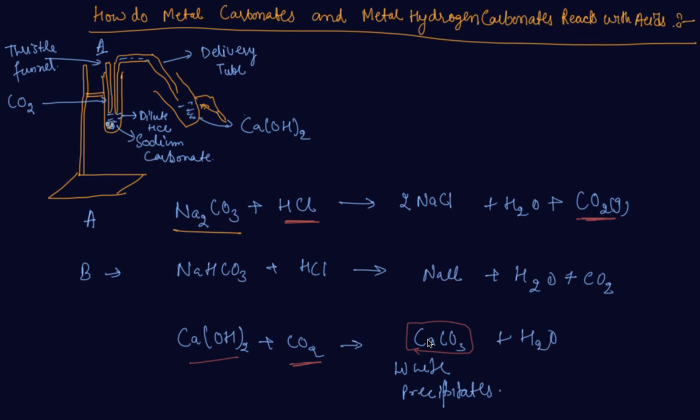So students, it is very important from the exam point of view also that it might come that you have to complete the reaction. And in the left side of reactants, so you are given only metal carbonate and HCl solution. So what will be in the product side is the carbon dioxide gas, and the metal chloride, if it is a HCl solution, and water.